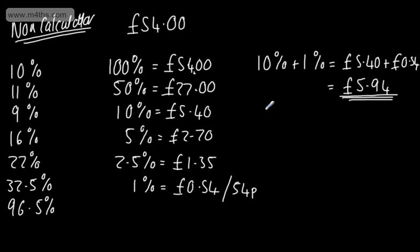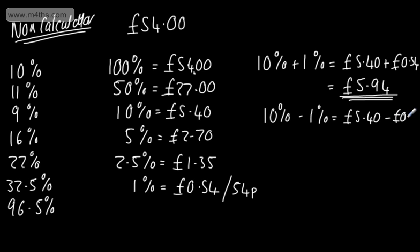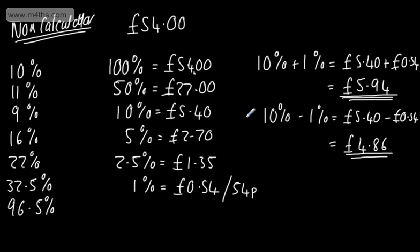For 9%, that's 10% minus 1%. So I subtract: £5.40 minus 54p (£0.54), giving £4.86. There are lots of different approaches — some people like to do 5% and add four lots of 1%, but I think it's easier to take 10% and subtract one.